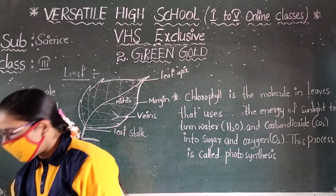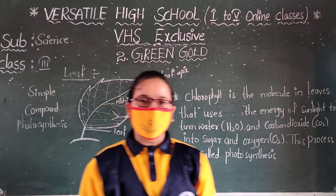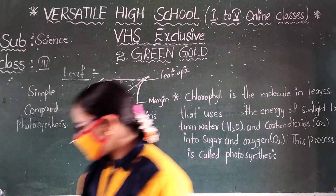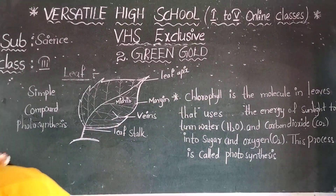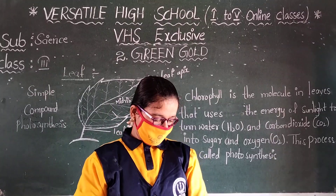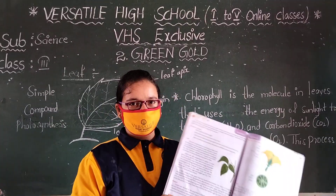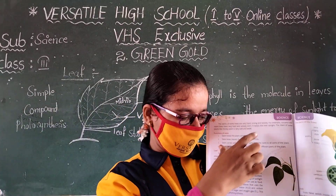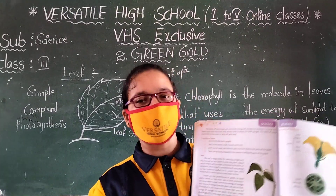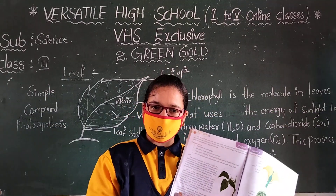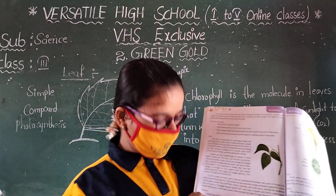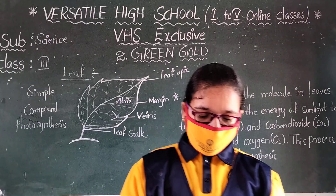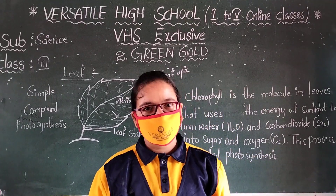This leaf is responsible for catching the sunlight. These layers protect the leaves from insects and bacteria. Today's topic is over. Once you read page number 16. All of you read this paragraph once again. And tomorrow we will learn about the flowers, fruits, and seeds.